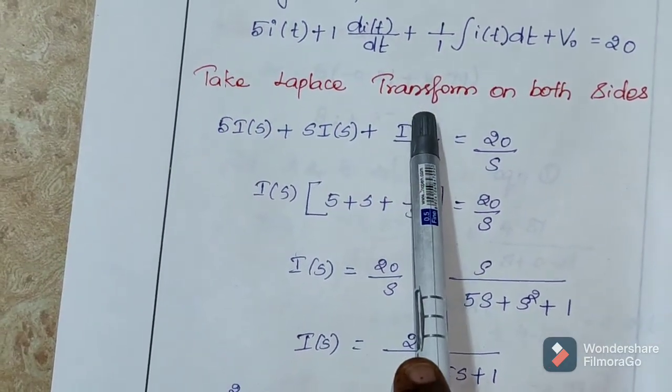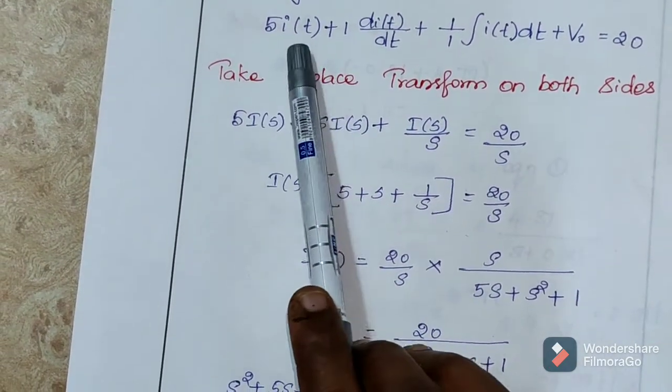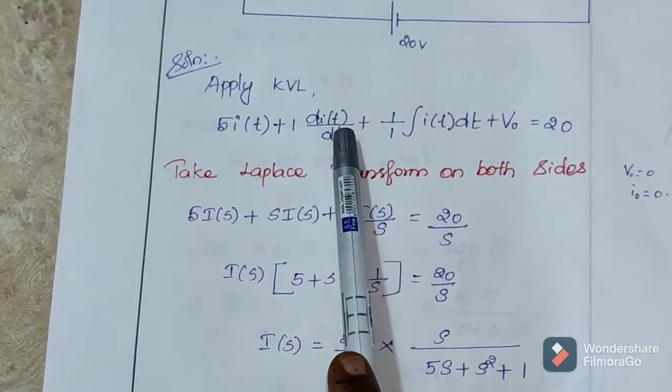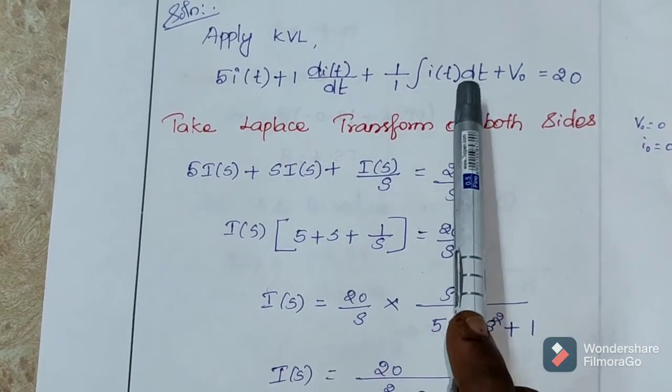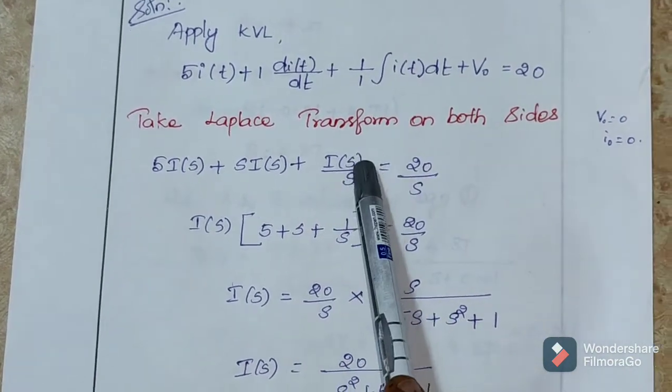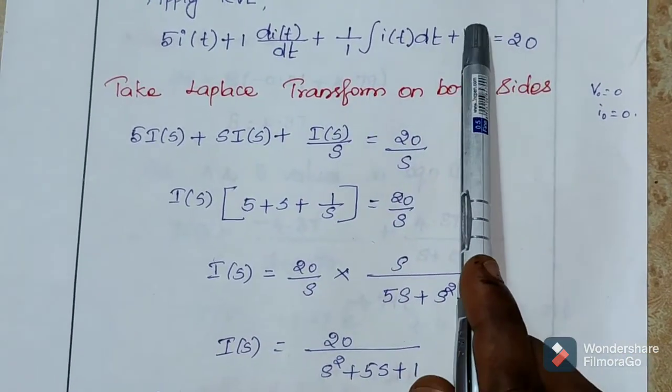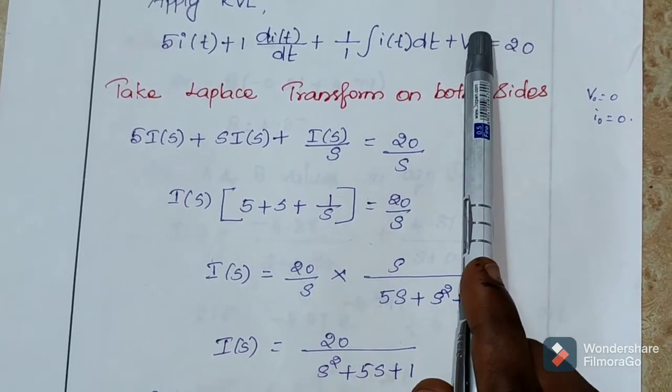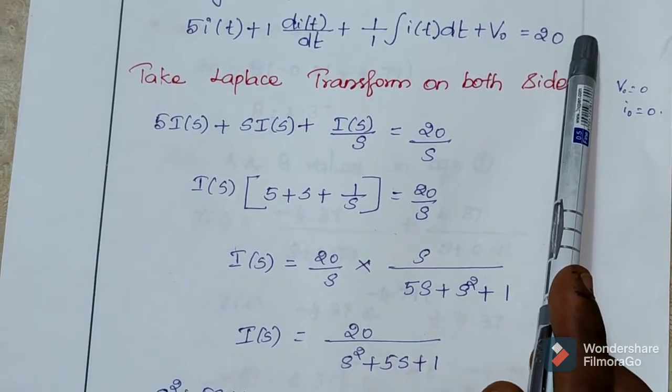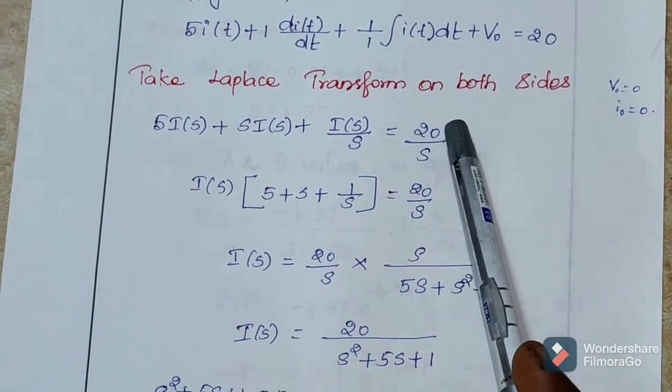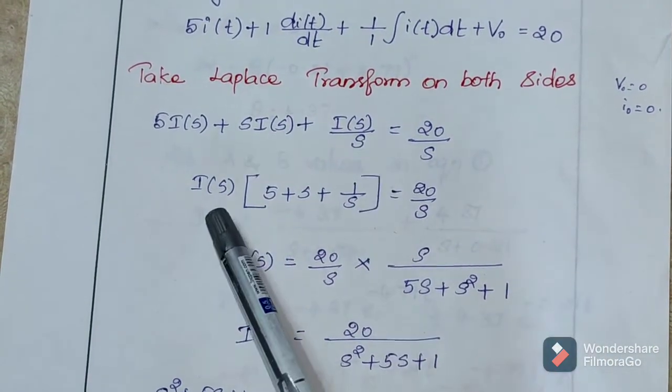Now, apply Laplace transform. Laplace transform of I(t) is I(s) and Laplace transform of dI(t) by dt is s into I(s) and integral of I(t) is I(s) by s. And this is the initial voltage value. Assume this is 0. And constant 20, Laplace transform is 1 by s. So, 20 into 1 by s. I(s) is the common term. Take it as outside.